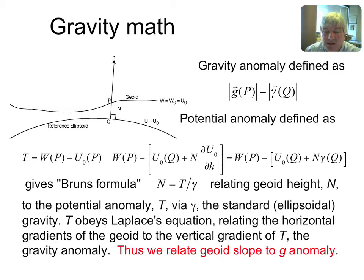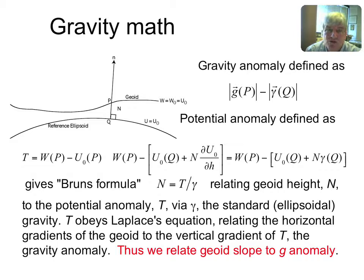The basic point is this: the geoid height above or below the ellipsoid can be related to the anomaly in potential energy of the gravity field through Bruns' formula — a first-order Taylor expansion. Relating it to potential is nice because the potential obeys Laplace's equation. That means vertical derivatives are coupled to horizontal derivatives. The vertical derivative of the potential is the gravity anomaly itself. So we can get gravity anomalies related to horizontal gradients of the geoid — geoid slopes. That's all you need to know.